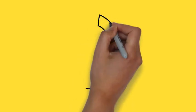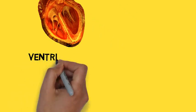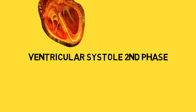After that, the ventricles contract more to give more pressure and push the blood into the pulmonary trunk and aorta. That's the ventricular systole second phase.